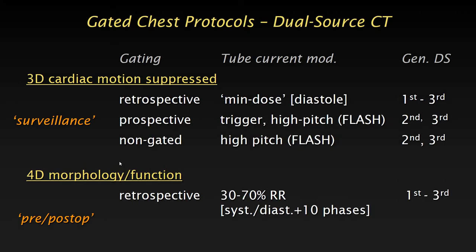In general, the gating principles we are discussing involve a true 4D acquisition with retrospective gating from 30 to 70%, usually reconstructing 10 phases, and probably more for some indications in the future. This is as opposed to a typical 3D gated acquisition or a motion-suppressed acquisition using flash mode with mean dose — which may be appropriate for standard surveillance where you just want to see the aortic outer diameter.